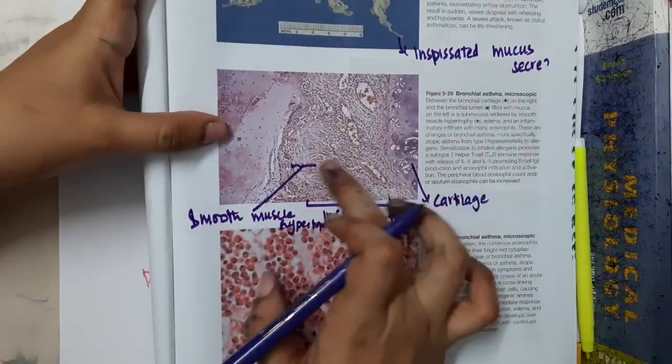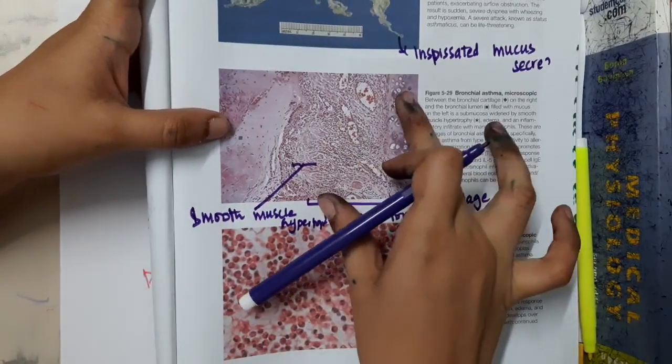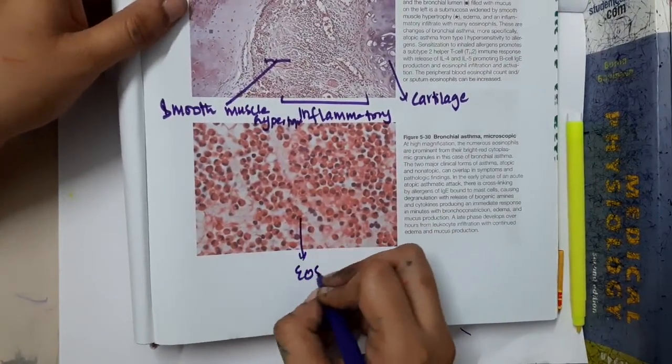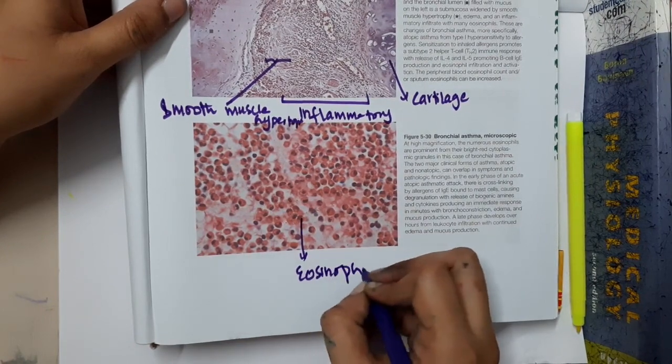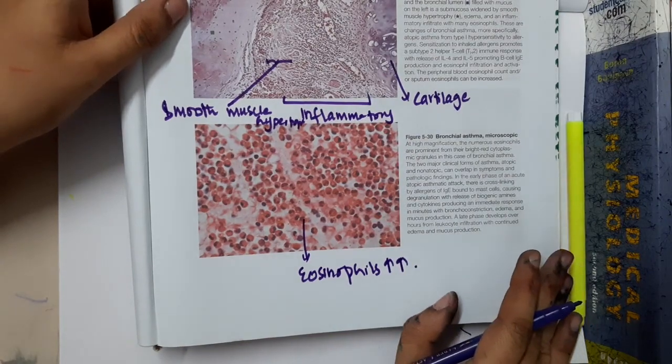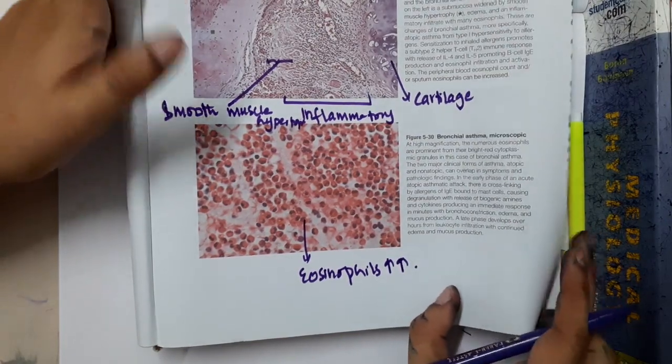If you see this inflammatory exudate and magnify it, you get this image. All these are actually eosinophils, which are increased in a patient with bronchial asthma because of allergic manifestation.